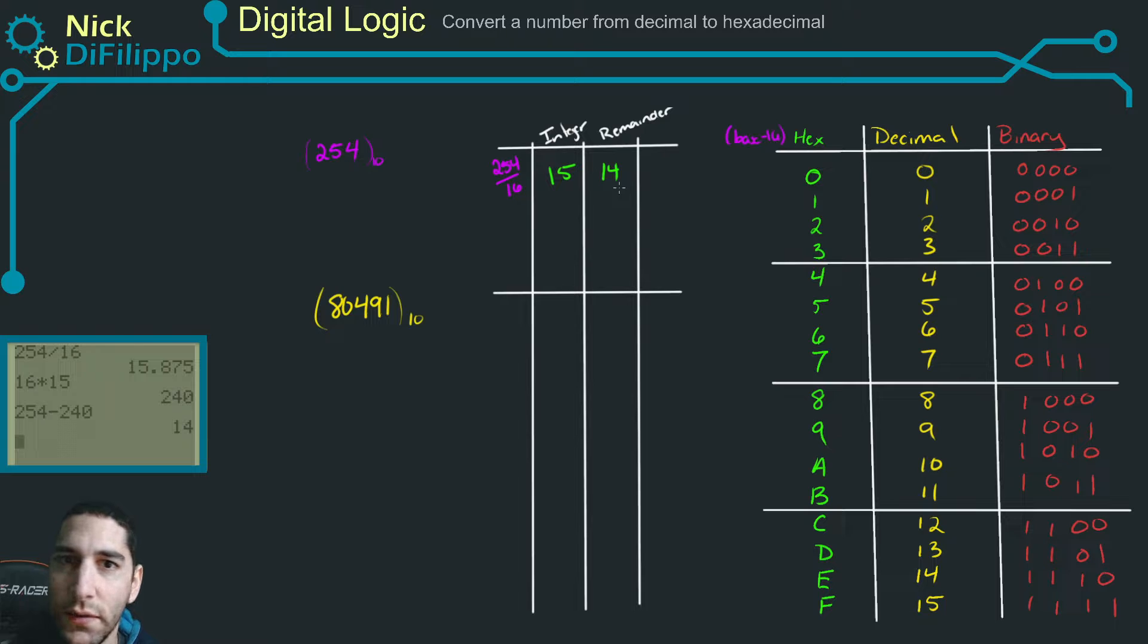The remainder is important because it shows us what one of the hex values are. So we take this 14 remainder and we match it up with decimal, and we match it up and we pick the hex equivalent. So E. So right here, this value is E.